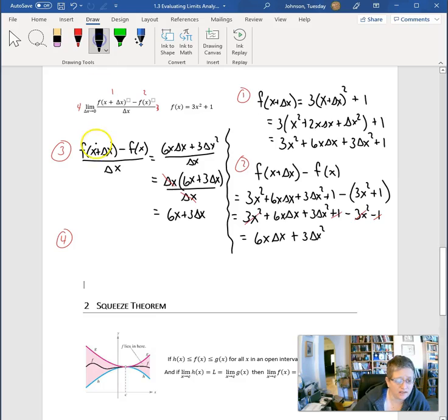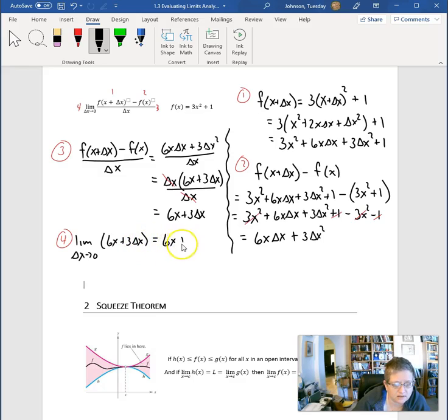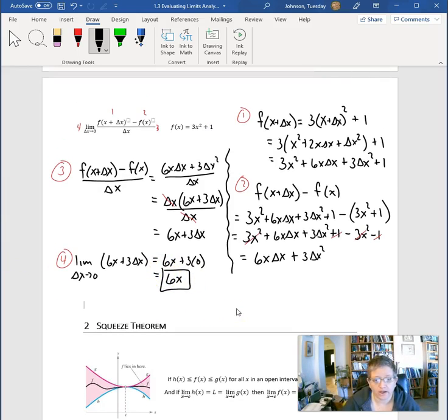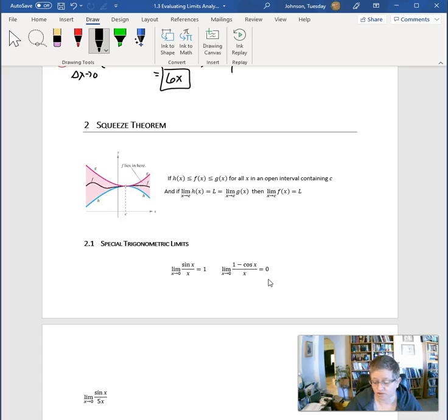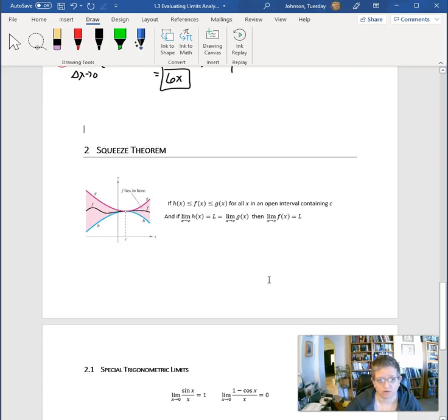Now I forgot to tell you about step four. Step four is where we actually find the limit. The limit as delta x approaches zero of 6x plus 3 delta x is 6x plus 3 times zero, which is 6x. That was a lot of work, but that's all right. We actually did the exact same work in the previous example. You could totally do this. It's just algebra, and you're good at algebra.